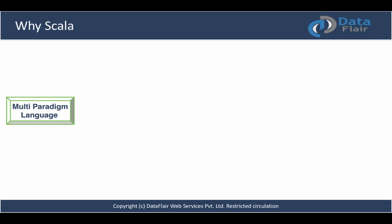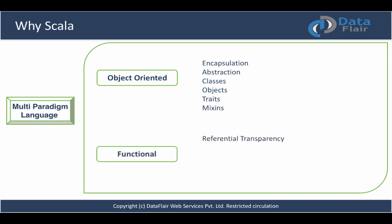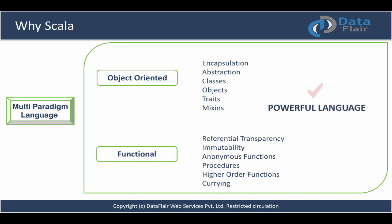Next, Scala is a multi-paradigm language. Because Scala has the best of both worlds — object-oriented and functional — it's a very powerful language. It's one of the very few languages that can support both paradigms and still work effortlessly. It has capabilities such as strong encapsulation and abstraction, classes, objects, traits, and mixins. It also supports functional constructs like referential transparency, immutability, anonymous functions, procedures, higher-order functions, and currying. That is the reason we have a very powerful language that can be used in many ways.